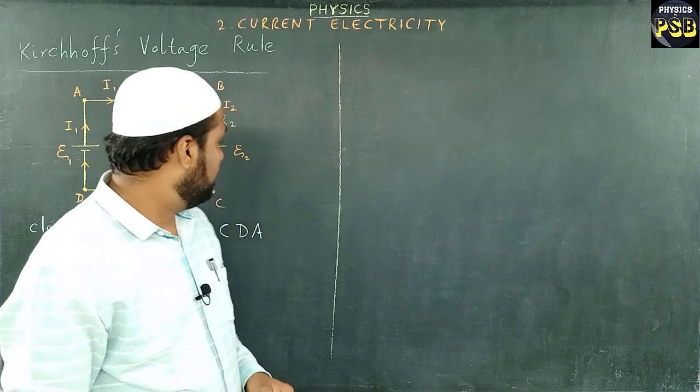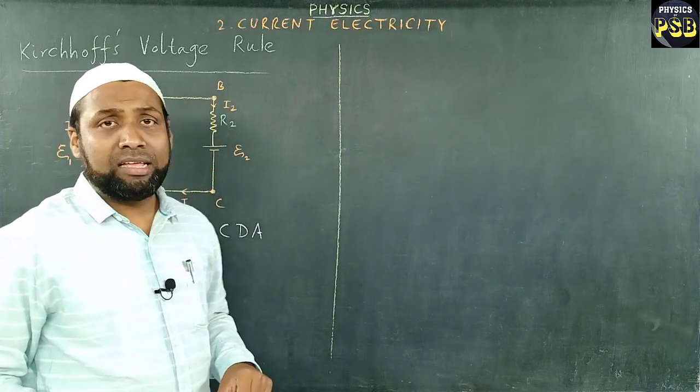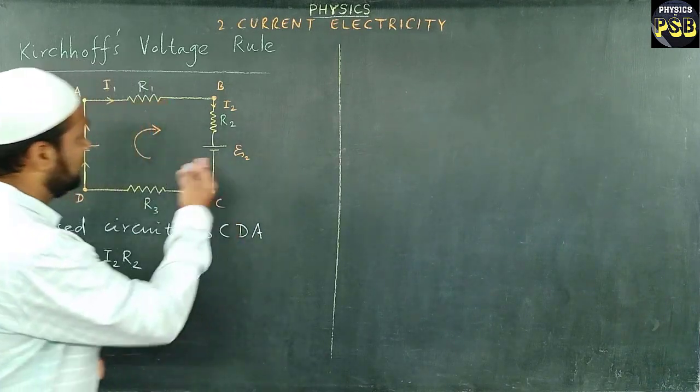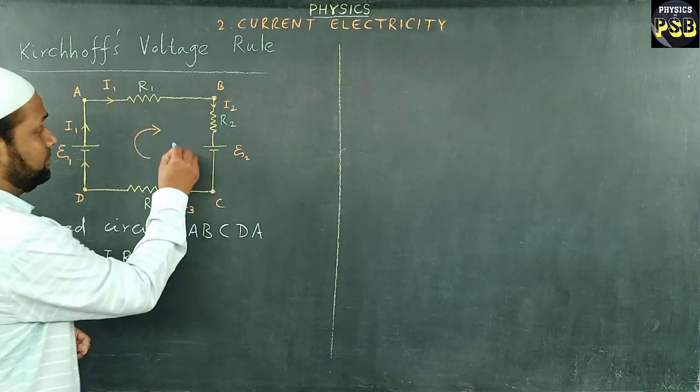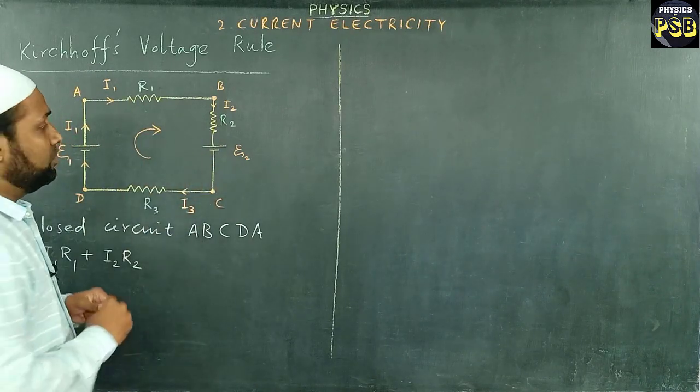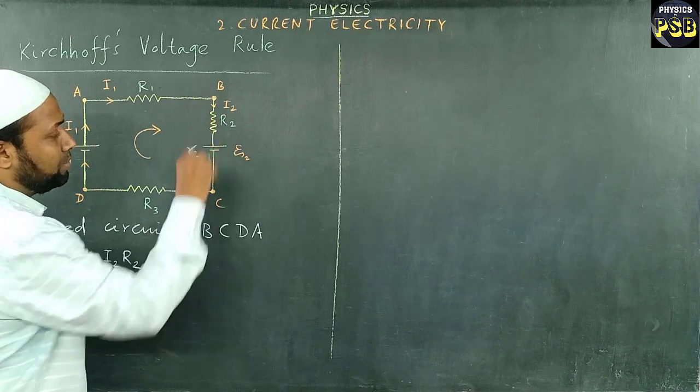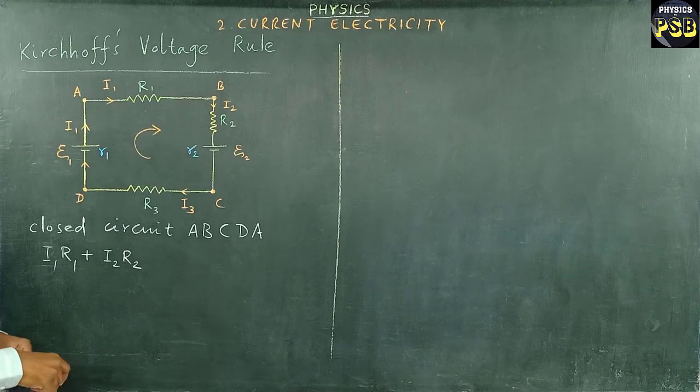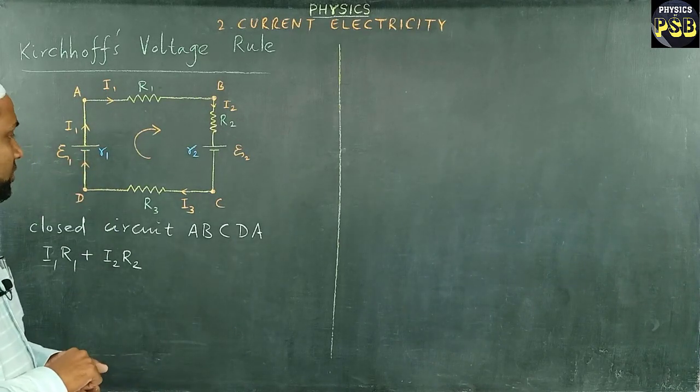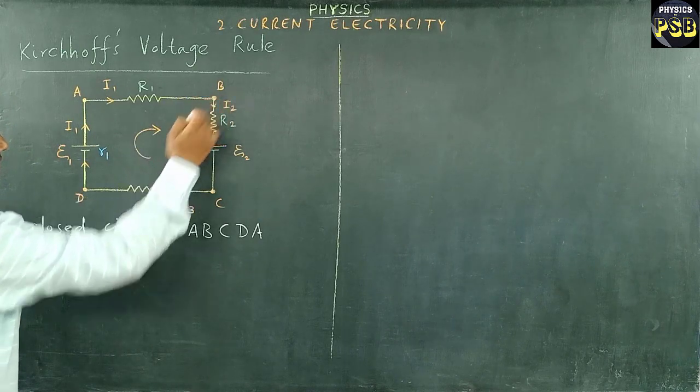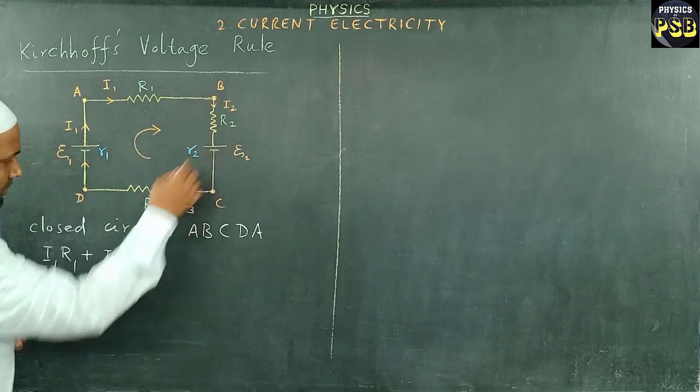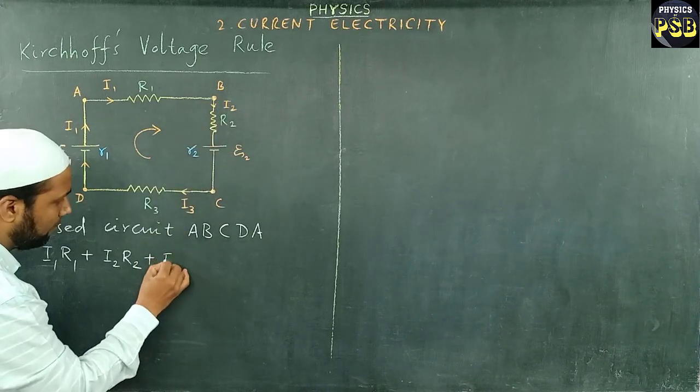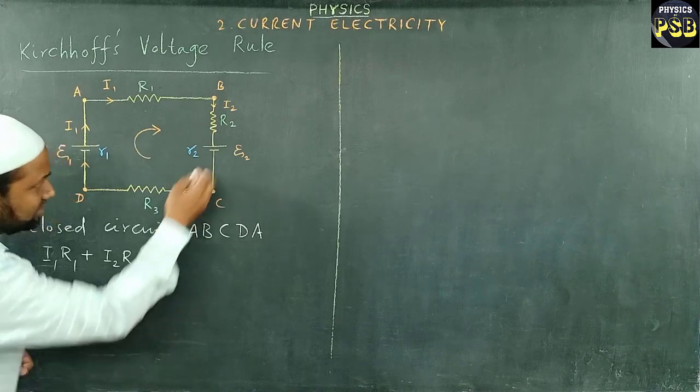We have learned that every cell has some internal resistance due to or offered by the electrolyte. So here, this cell has internal resistance R2, and this cell has internal resistance R1. If it is so, this current flows through this cell. So I multiply I2 with internal resistance of this cell, R2.